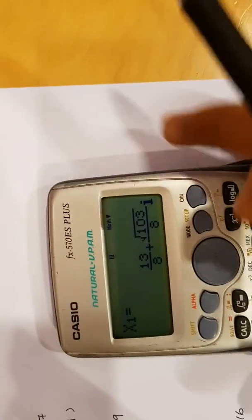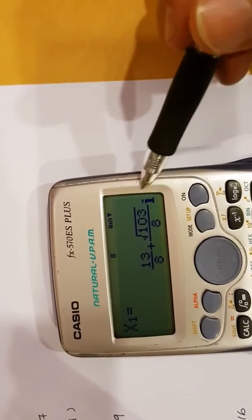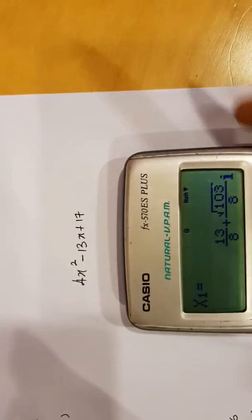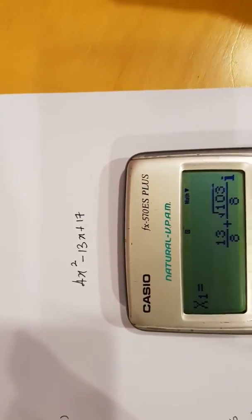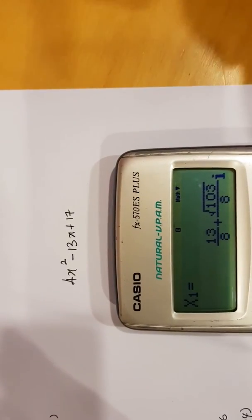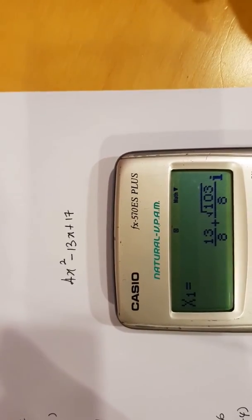Notice there's a big I at the end. What this means is that this quadratic equation cannot be factorized. Which means there are no roots. We have no factors.